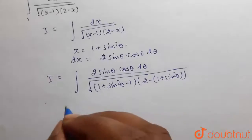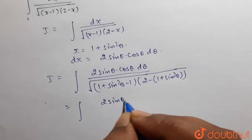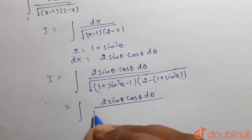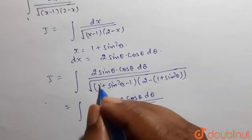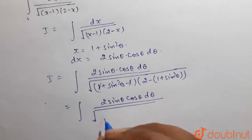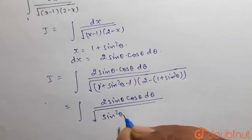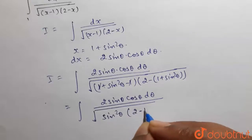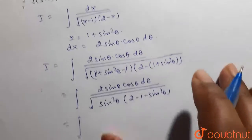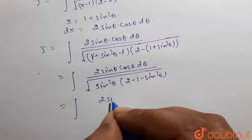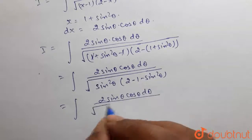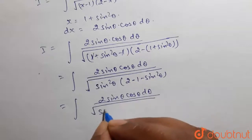So, this will be equal to integration of 2 sin theta into cos theta d theta divided by under root of — now 1 and minus 1 will cancel out, it will be 0 — so it will be sin square theta, then (2 minus 1 minus sin square theta). From here we get integration of 2 sin theta cos theta d theta divided by under root of sin square theta.